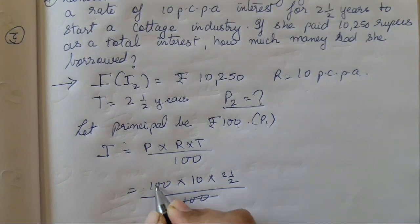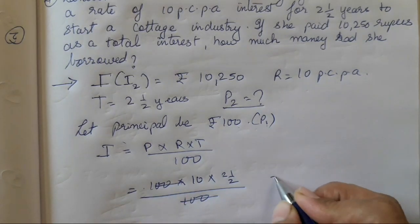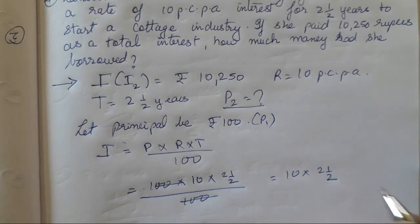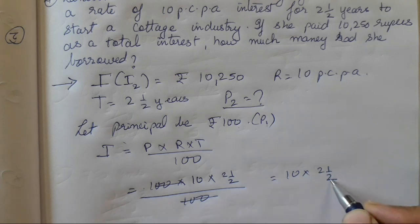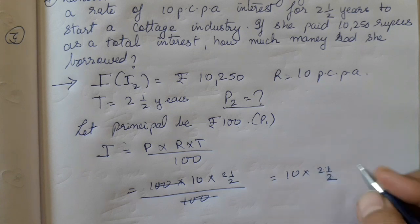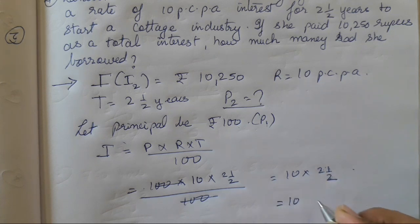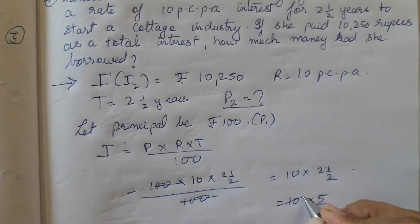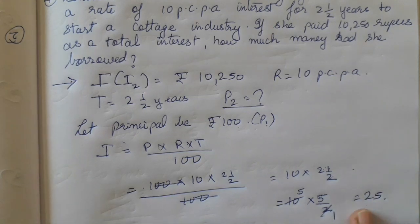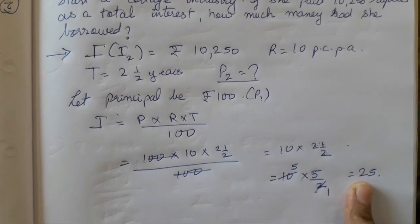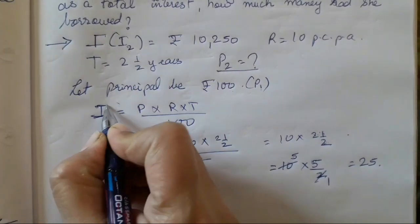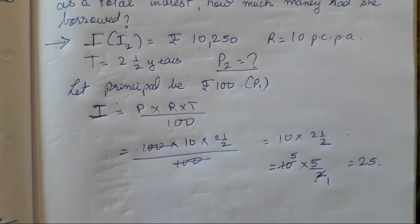So I is equal to P into R into T upon 100, where P we have supposed as 100, into 10, into 2 and a half, upon 100. This 100 and that 100 gets reduced. What remains is 10 into 2 and a half, which equals 10 into 5 upon 2. That gives us 25. So the interest on a principal of 100 rupees is 25 rupees — this is I₁.